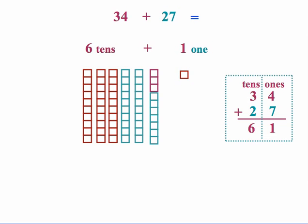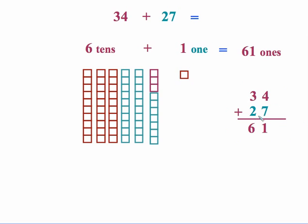Then change this to where it looks like it's normally stated as a standard algorithm. So we ended up with 61. 6 tens and 1 one.